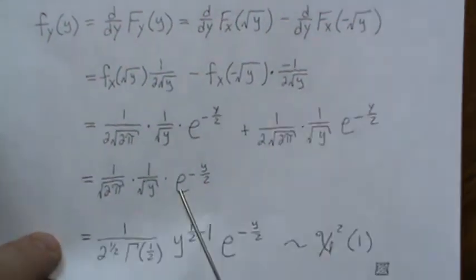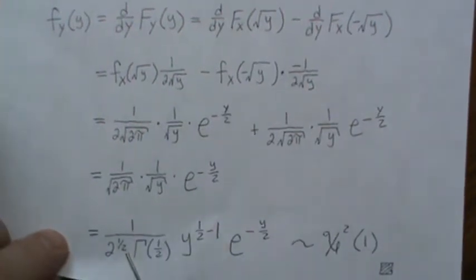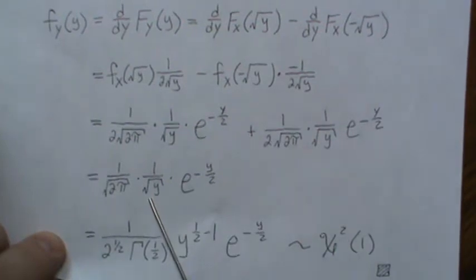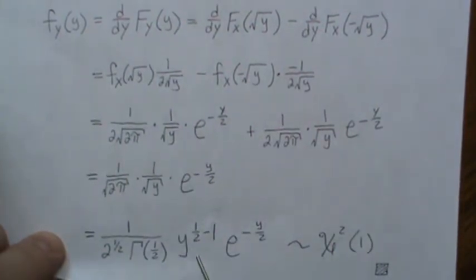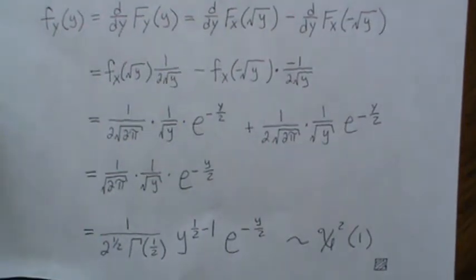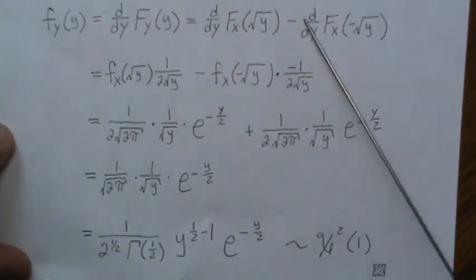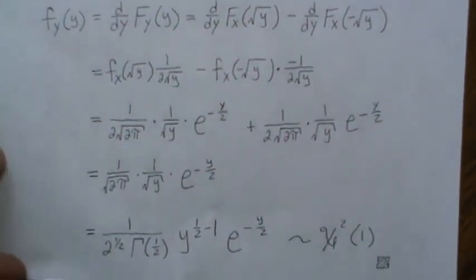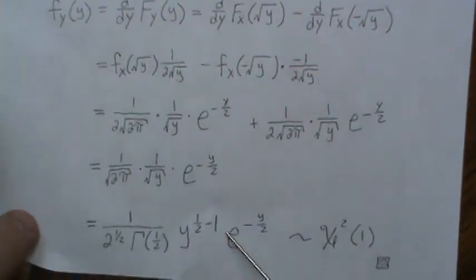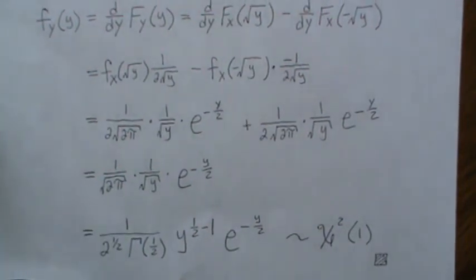We can rewrite the result to resemble the chi-squared distribution: with 2^(1/2) · Γ(1/2) · √y and e^(−y/2), this is a chi-squared(1) distribution. In the next video we'll look at the change of variables technique and re-examine this same example in a different way, confirming it is chi-squared(1) again.